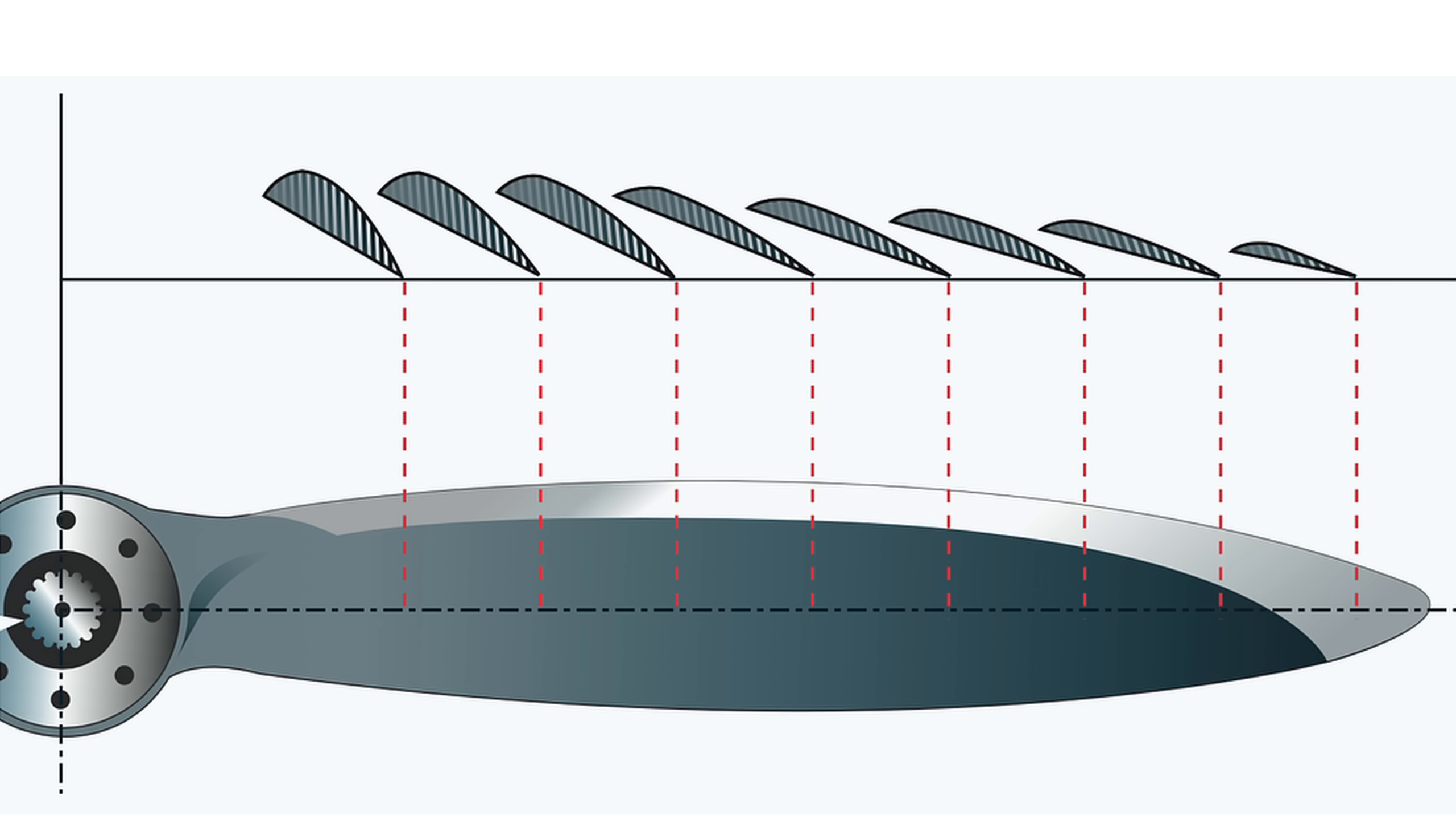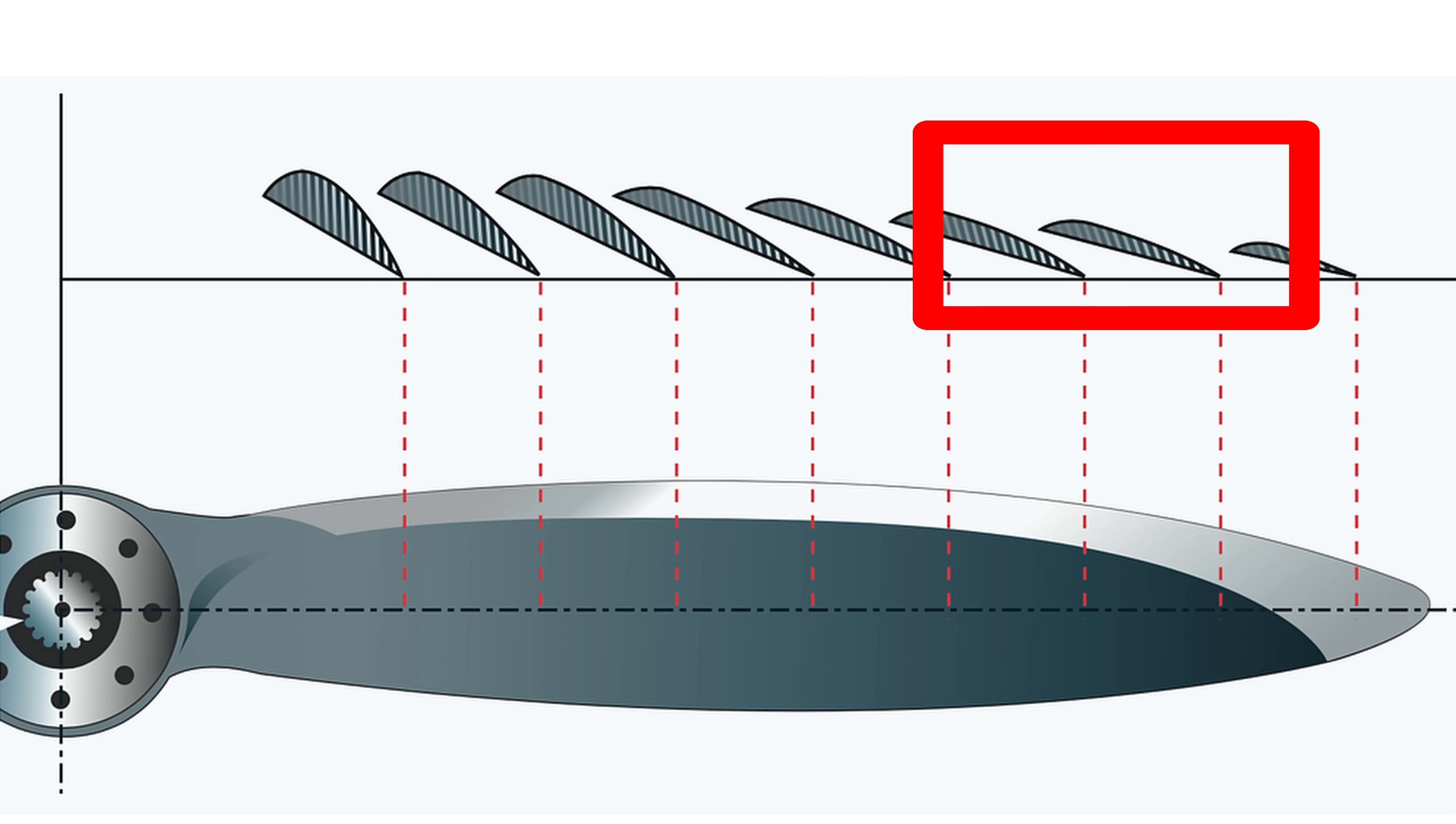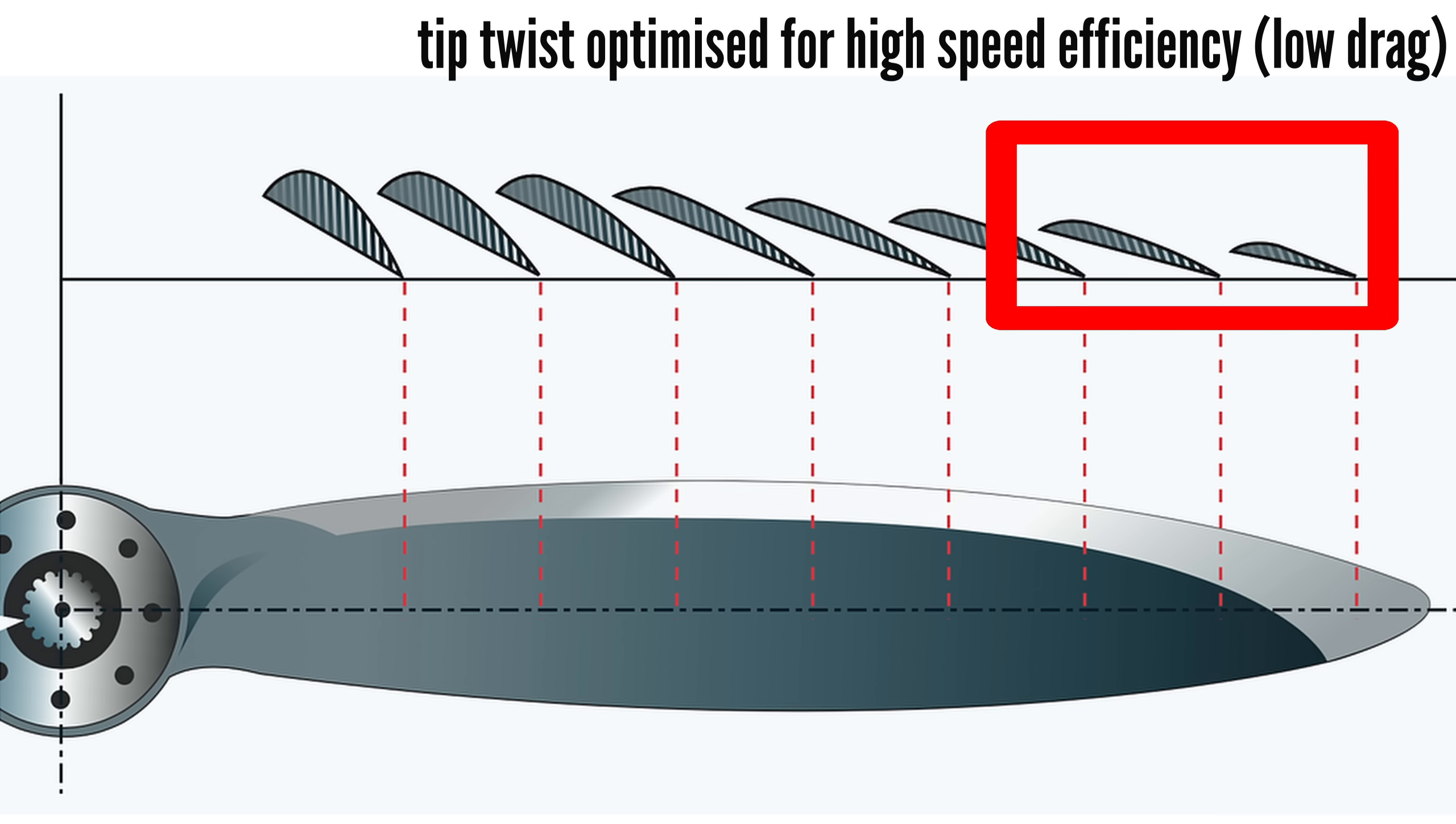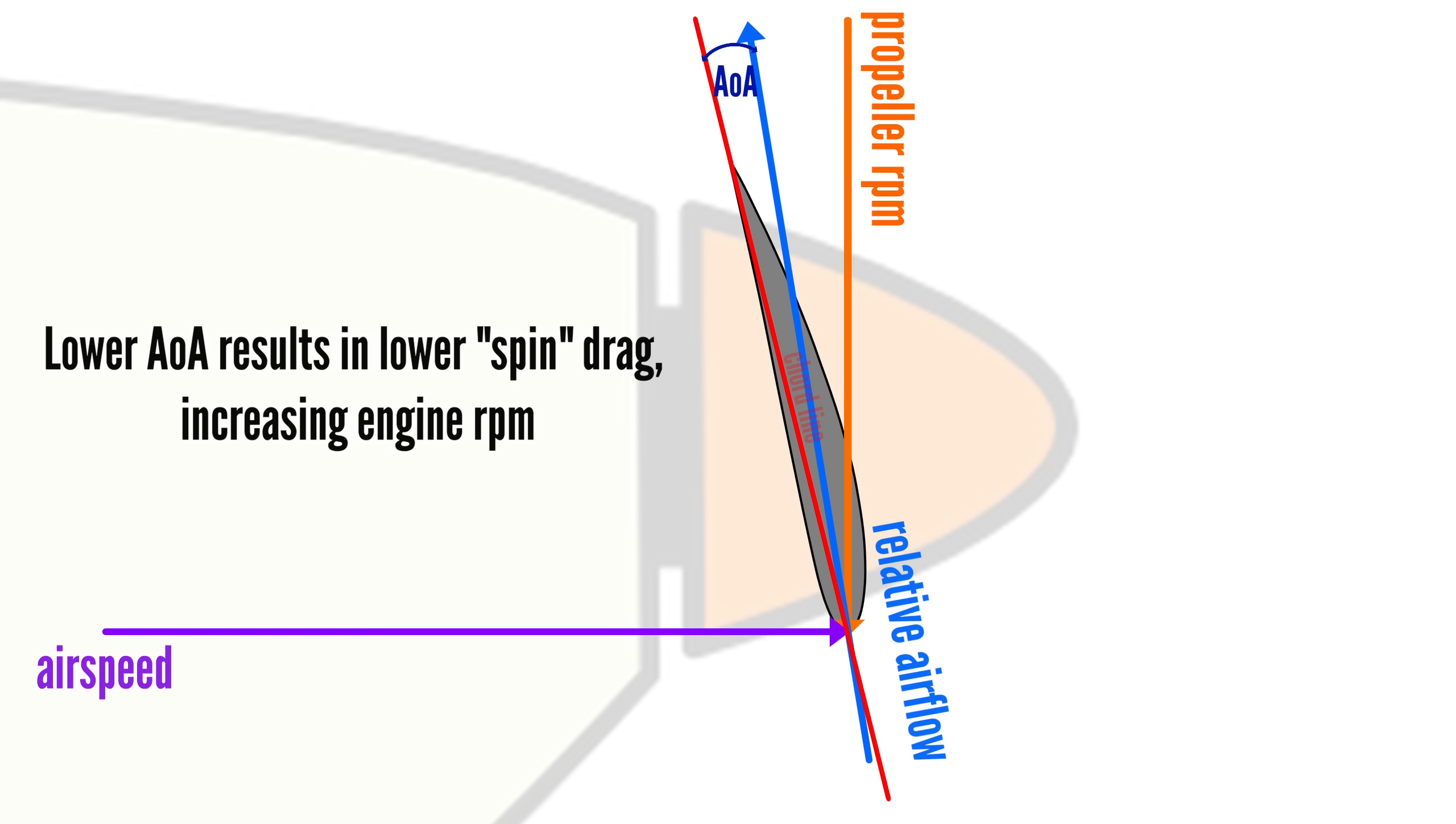A typical propeller usually has blades twisted to achieve a higher angle of attack at the root, optimizing low-speed thrust, while the angle of attack at the tip is kept lower to minimize drag at high airspeeds. However, as the airplane accelerates and the effective angle of attack decreases, the load on the propeller also decreases, causing the propeller and engine RPM to increase.